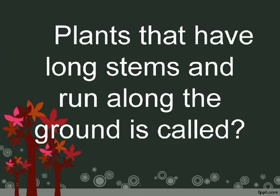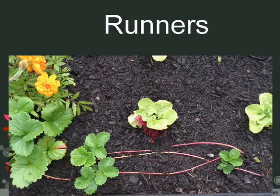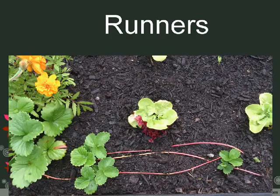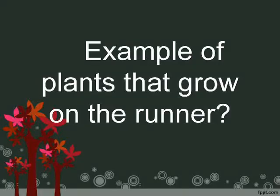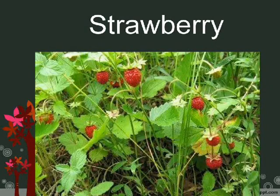Plants that have long stems and run along the ground are called runners. An example of a plant that grows on runners is strawberry.